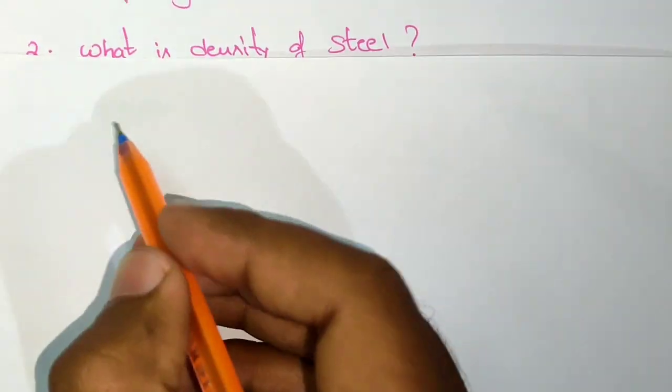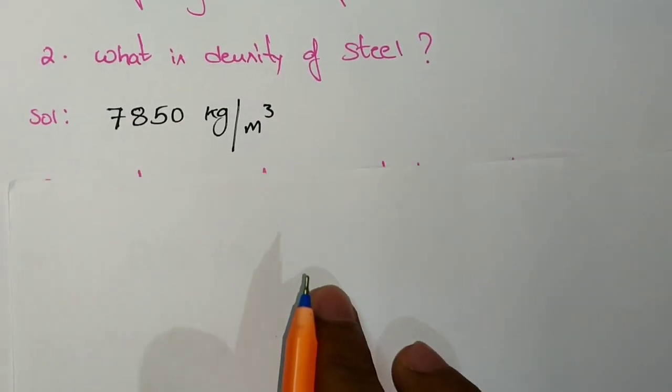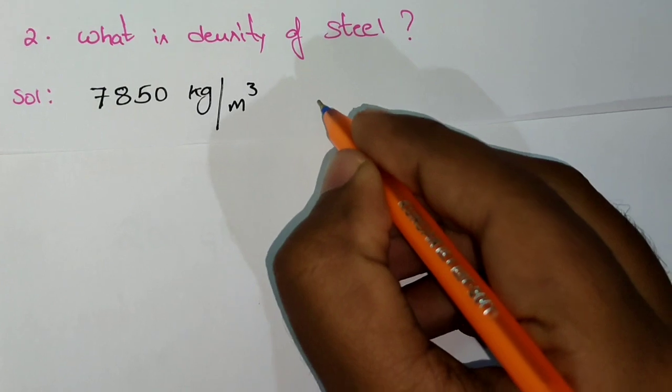The next question is: what is the density of steel? The density of steel is 7850 kg per meter cube or 78.5 kN per meter cube.